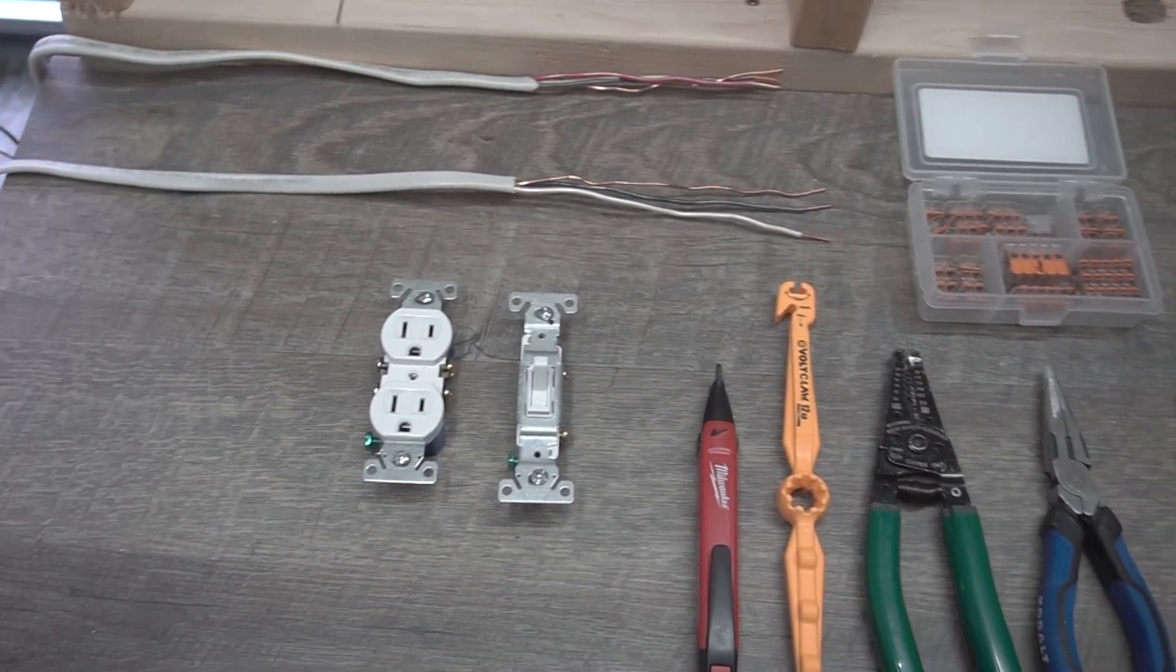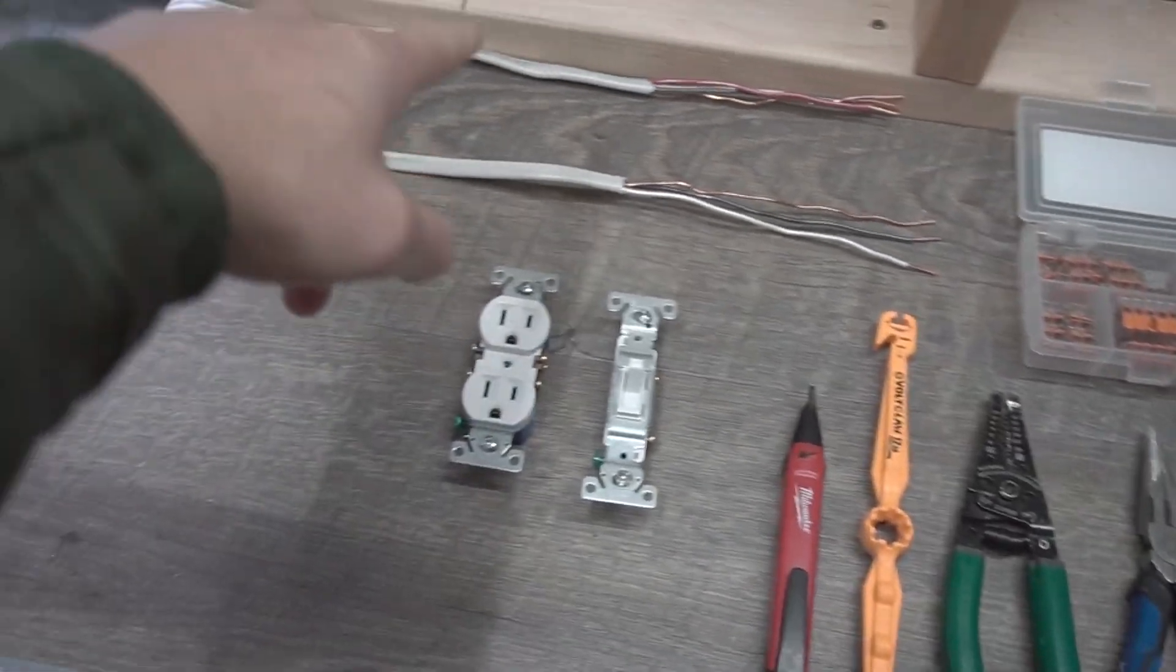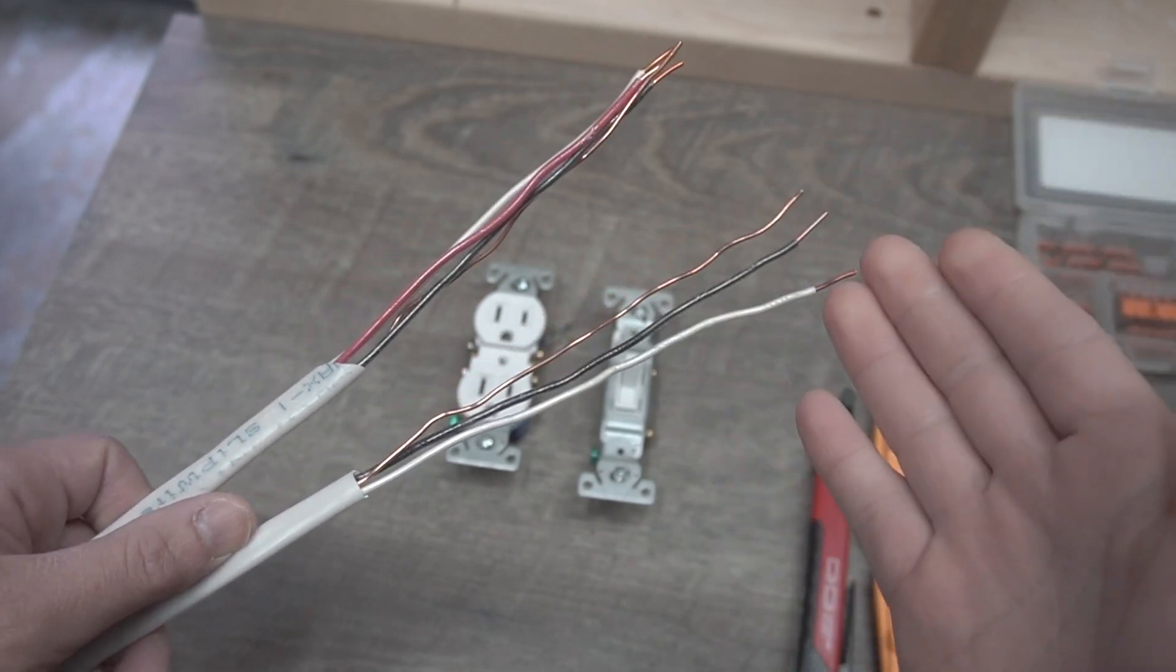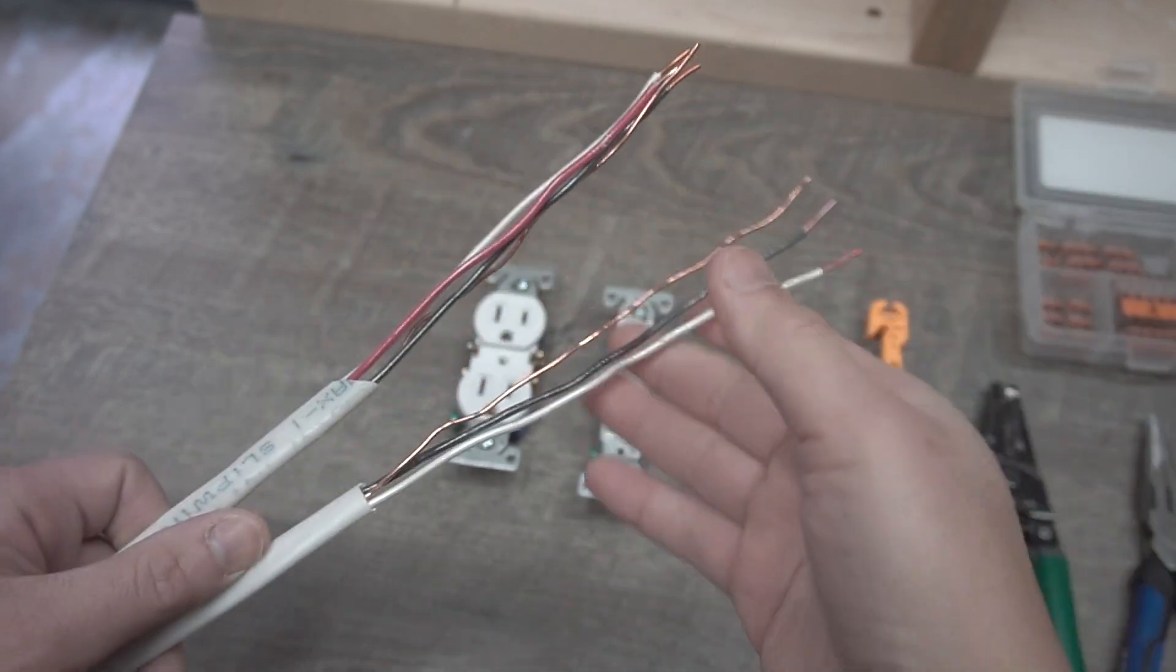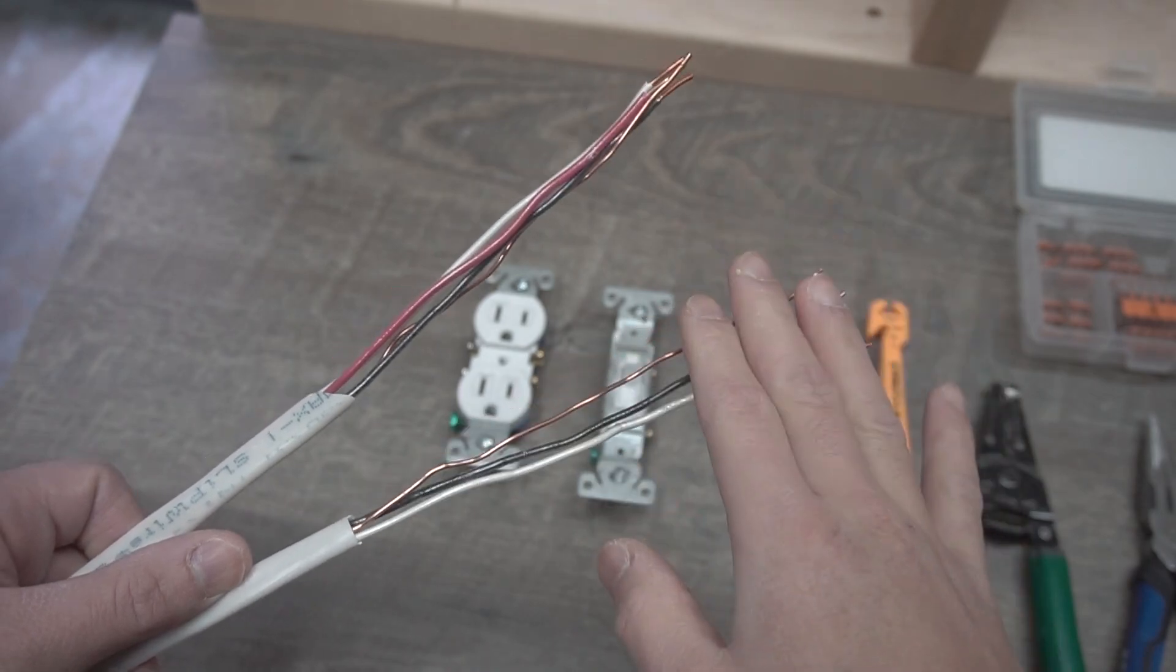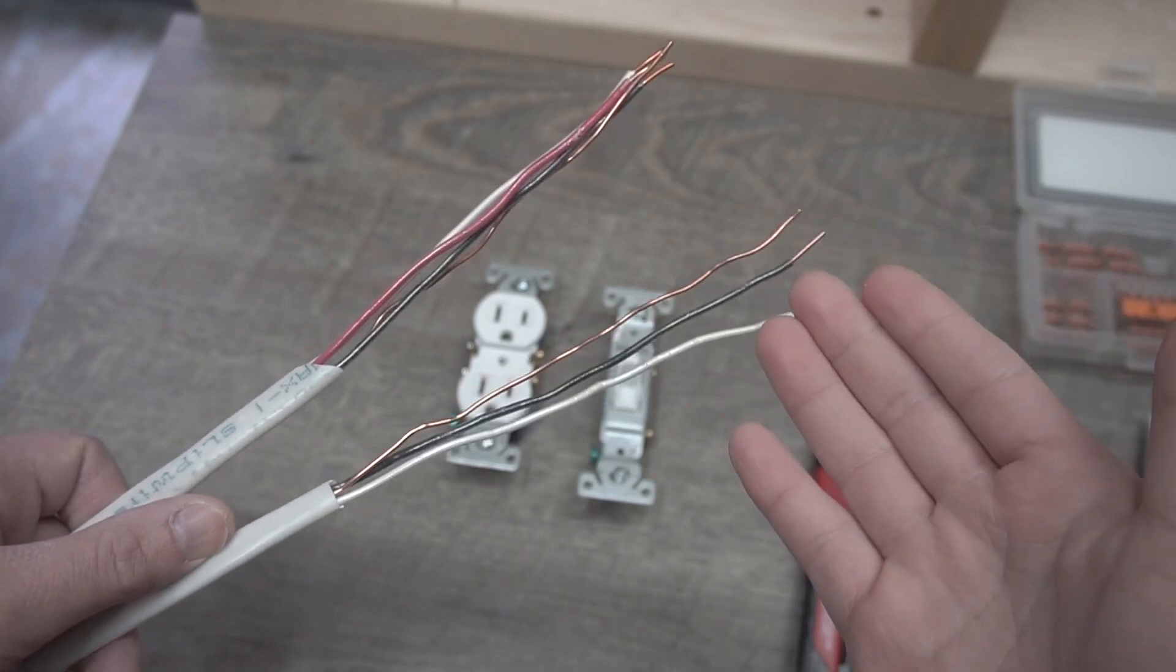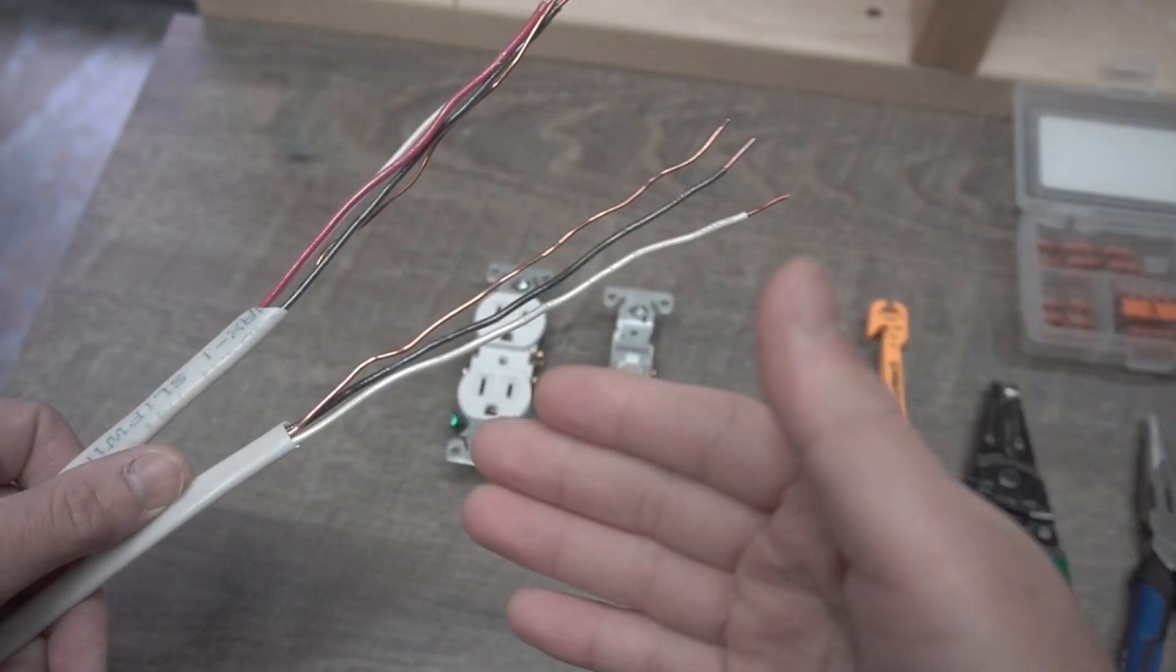Here are all the tools and materials that I'll be using throughout this whole video. Let's start off with the wiring first. The wiring that you can use for this project is either a 12 gauge wire or a 14 gauge wire. What I'm holding here is a 14 gauge wire. It all depends on what power source it's coming from.